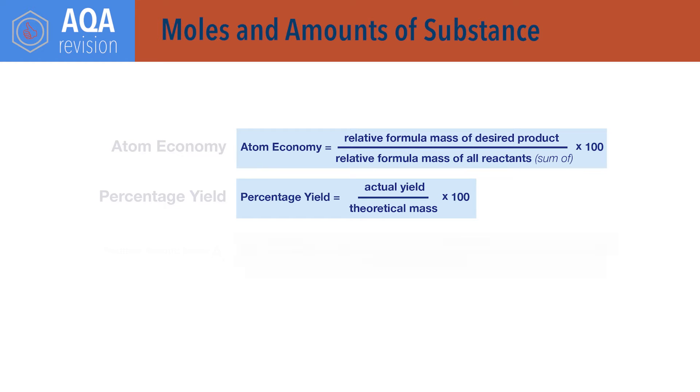Relative atomic mass, Ar, equals sum of each isotope mass times its percentage abundance, divided by 100.